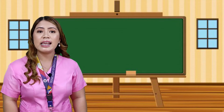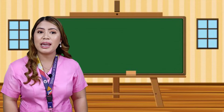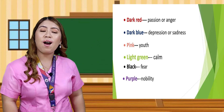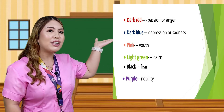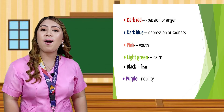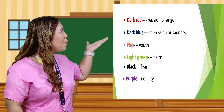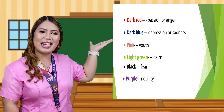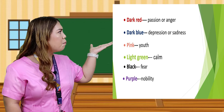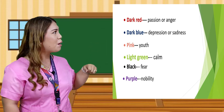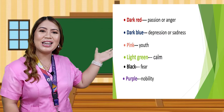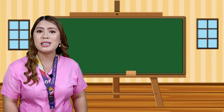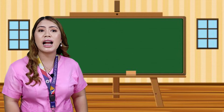For Japanese face painting, they represent the following: Navy or dark reds represent passion or anger. Dark blue represents depression or sadness. Pink represents youth. Light green represents calm. Black represents fear. Purple represents nobility.